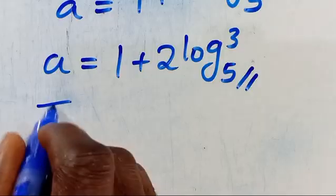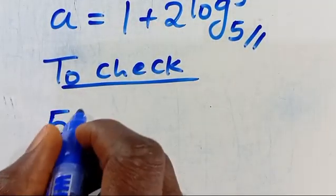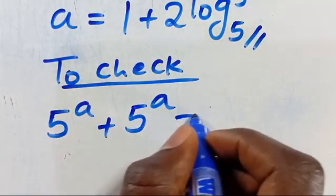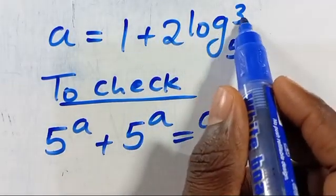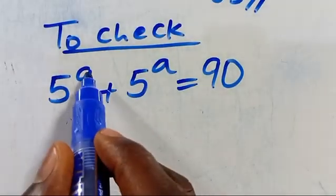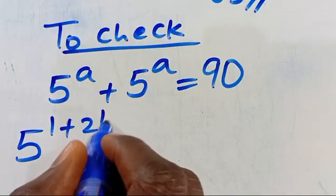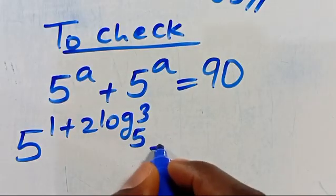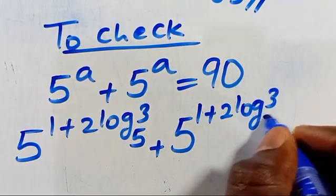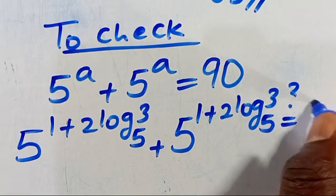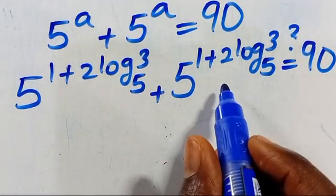Now let us check this value of a. We verify that 5 to the power of a plus 5 to the power of a equals 90. Substituting a equals 1 plus 2 multiplied by log₅3, we have 5 to the power of (1 plus 2·log₅3) plus 5 to the power of (1 plus 2·log₅3).